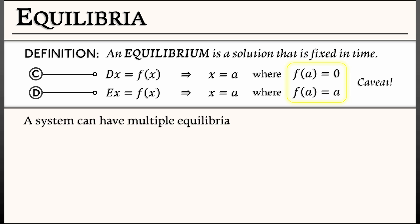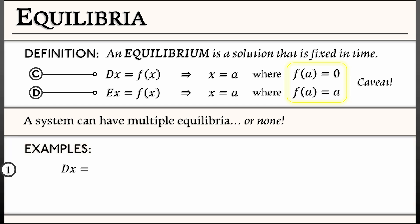Now any given system can have multiple equilibria or none at all. Let's look at a few examples. In continuous time, consider dx equals sine of x. Where are the equilibria? It's where sine of x vanishes, and that happens at all integer multiples of pi. That means there are infinitely many equilibria in this continuous time system.